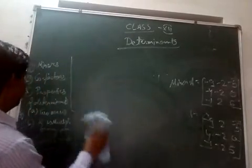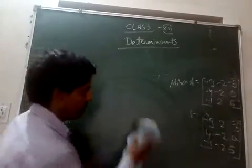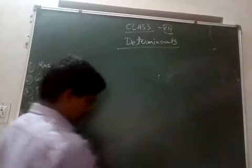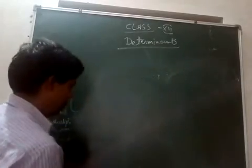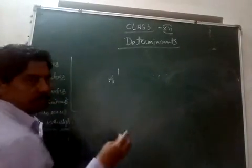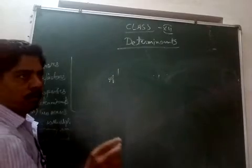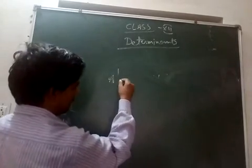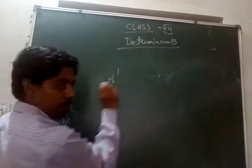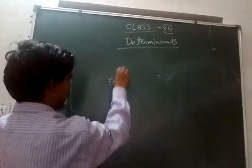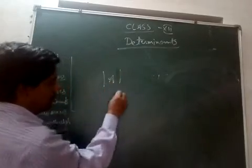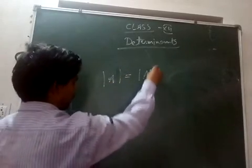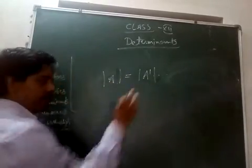Now we are dealing with some very basic properties of determinants. In matrix we learned about transpose — you make rows into columns and columns into rows. The first property is: if there is a matrix A and we find its determinant, then the determinant of matrix A transpose is the same as the determinant of A.